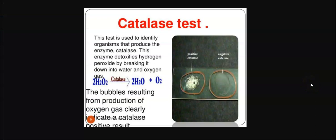Catalase is a test used to identify the organism that produces the enzyme catalase. Catalase is an enzyme which actually detoxifies hydrogen peroxide molecules. Hydrogen peroxide molecules are acted upon by the catalase enzyme, resulting in the production of water and oxygen. This is what is tested in the catalase test.